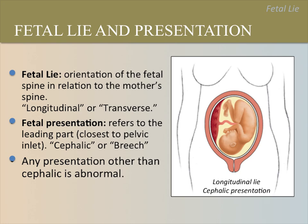A longitudinal lie, meaning that the fetal spine is aligned with the maternal spine, can mean that the baby is in either the cephalic or breech presentation. Another possibility is that the fetal lie is transverse, which means that the baby is in a sideways position with its head towards one of the maternal sides. Any presentation or lie other than cephalic is abnormal. About 1 in 300 term pregnancies has a transverse fetal lie, and only about 3% to 4% of term pregnancies are breech.